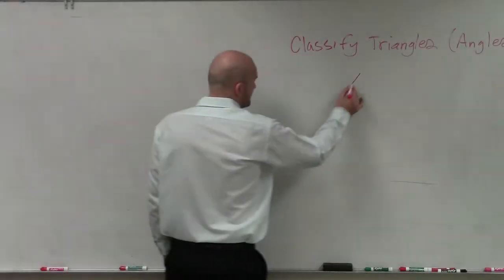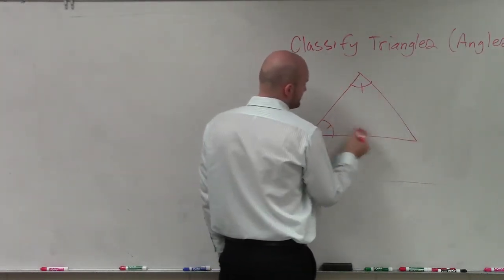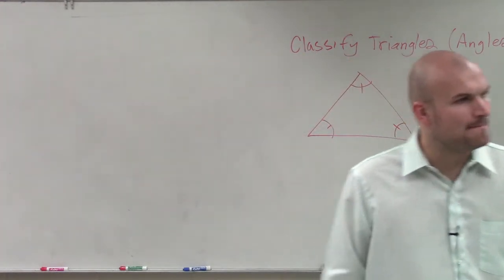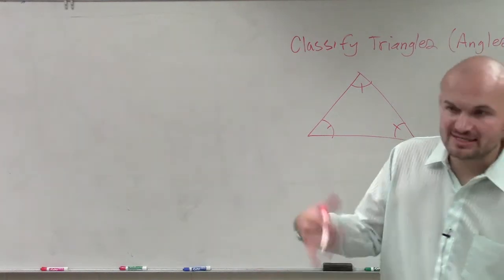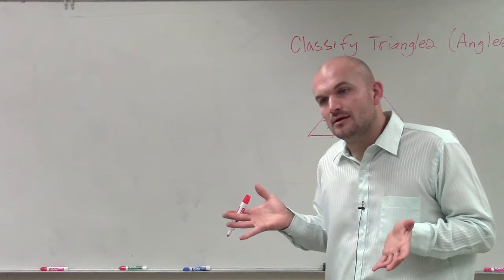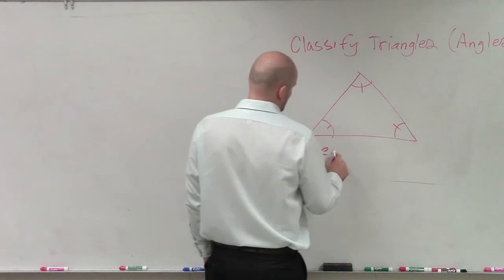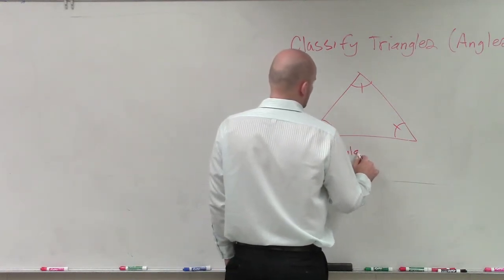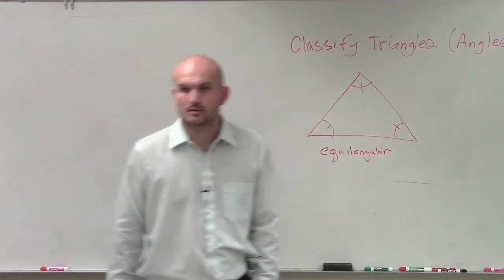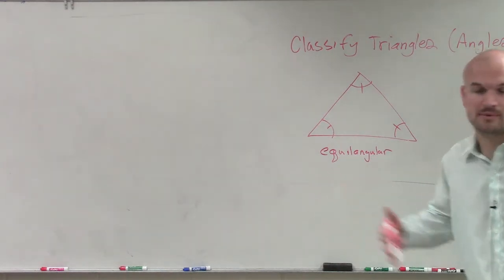The next one. What about if we have a triangle with three acute angles, but now each one of these acute angles is equal in measure? So it's very similar to an acute triangle — we still have three acute angles. However, if all three of them are equal in measure, these are what we call equiangular. That's an equiangular triangle: still all acute, but all three angles are equal in measure.